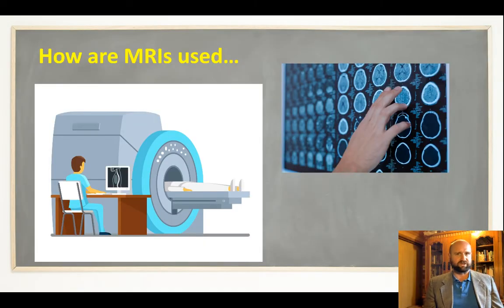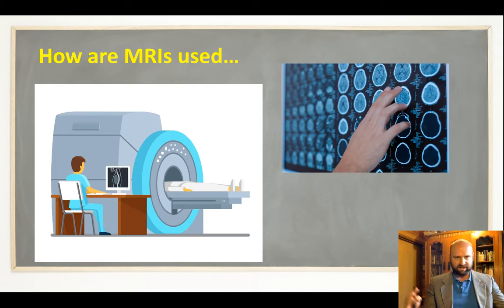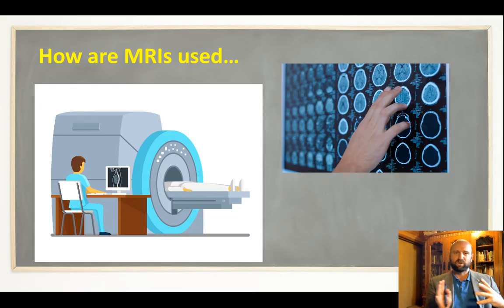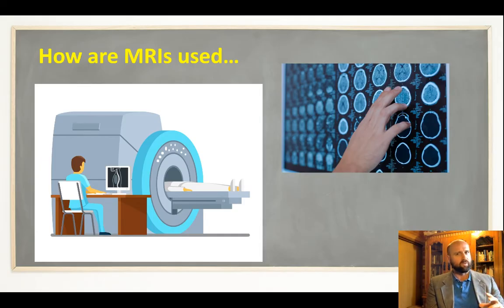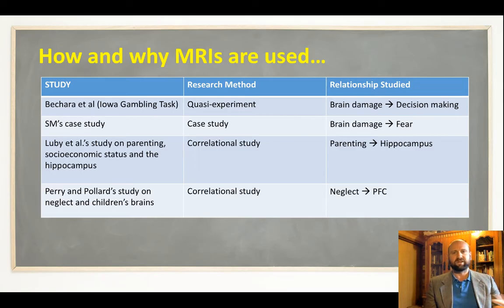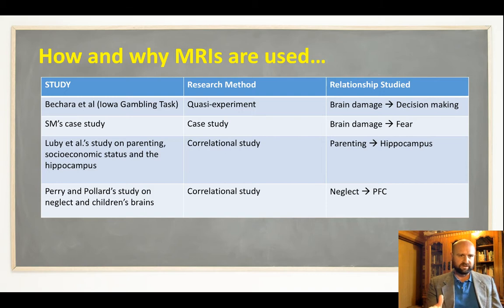When we talk about how MRIs are used, you could focus on the magnetic fields, what it does to the protons, radio frequencies, how that produces an image of the brain — but I don't think that's needed or useful. You can write excellent answers without focusing on that technical detail. Instead, I'm looking at the research studies — how MRI is used in particular psychological studies. I've taken four studies here: the Iowa Gambling Task, SM's Case Study, Luby's Study on Parenting, and Plurian and Pollard's Study on Neglect.